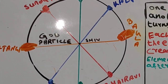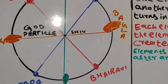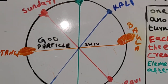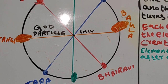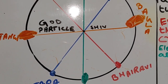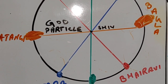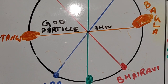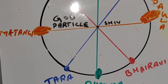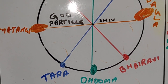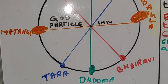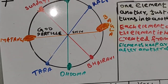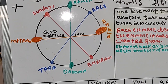Where the threads of all four elements meet in the center is Shiva — it is the God particle. This has also been discovered recently by scientists, and they have received the Nobel Prize for that.